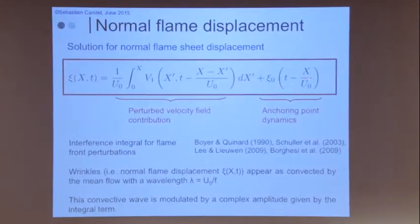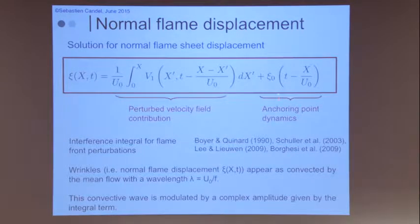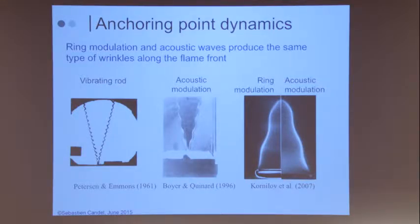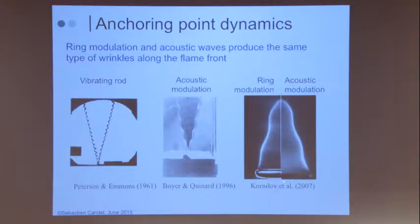The anchoring point can move, producing something which will be convected along the flame. There are old experiments by Pettersson and Emmons where they moved the edge of the flame. Boyer and Kina also looked at effects produced by moving the flame edge. Kornilov in Holland moved this using an electric field. One difficulty with the G equation is imposing the right velocity field — if you want to match experiments, the velocity field upstream of the flame has to be convective, otherwise you get something which doesn't look like the experiment.